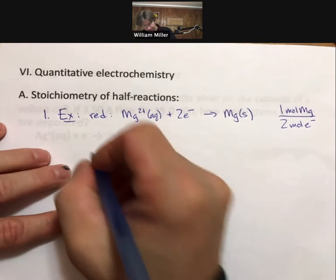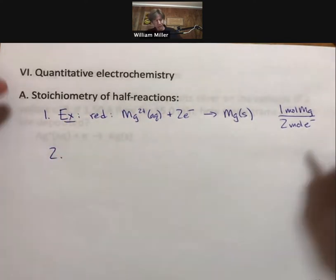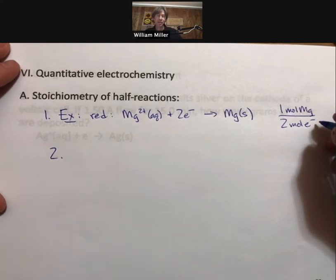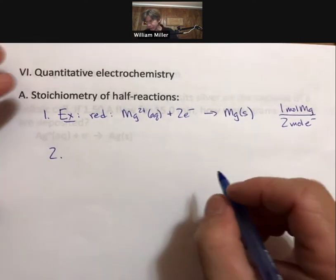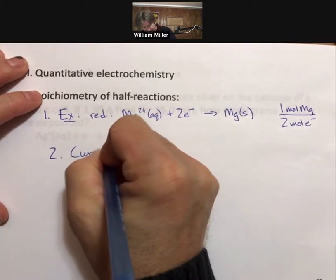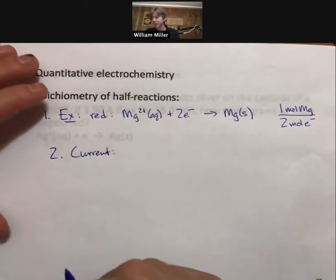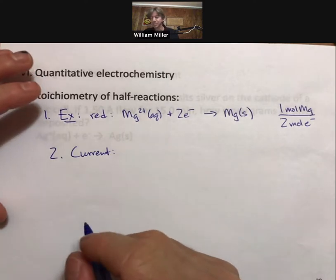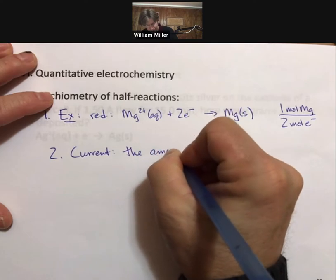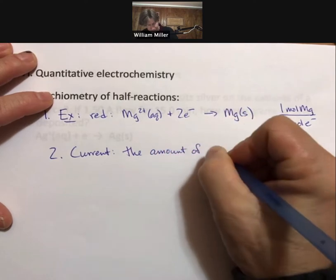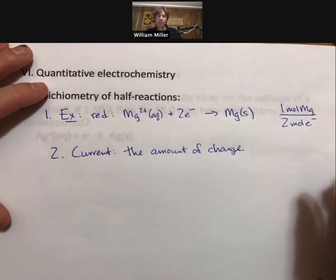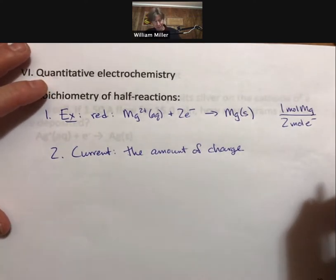Now to make this useful to us for solving chemistry and even engineering problems, we have to talk about something called current, and current is the amount of charge flowing past a point in a given time.